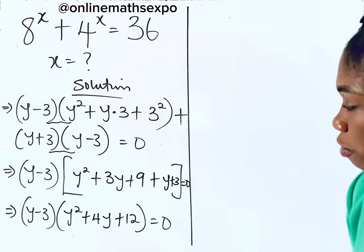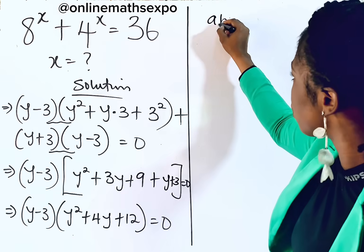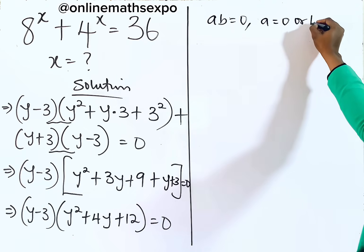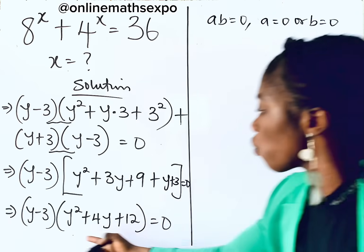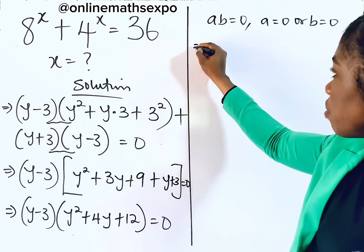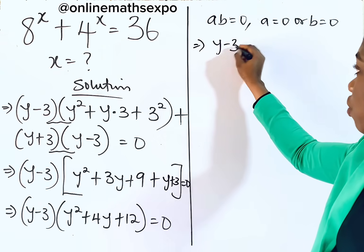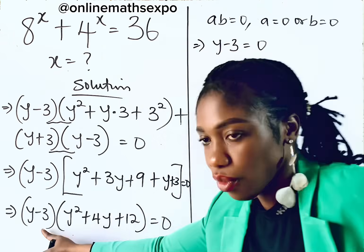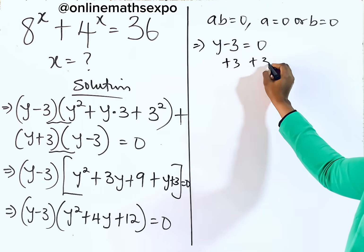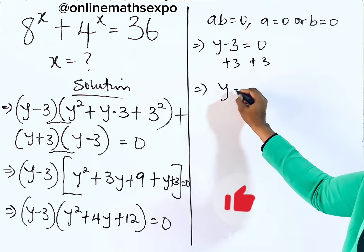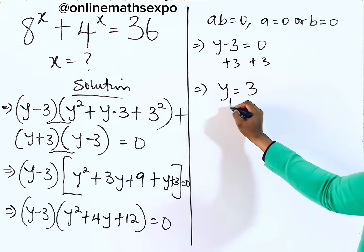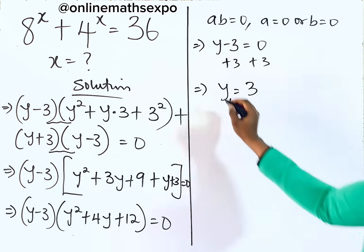Now, remember that for every product a·b equal to 0, either a equals 0 or b equals 0. So we have y minus 3 equals 0 as the first case. Adding 3 to both sides gives us y equals 3. So the first value of y is 3.